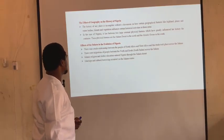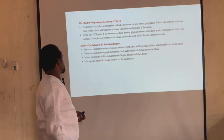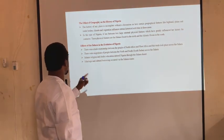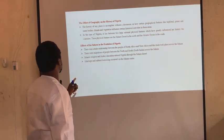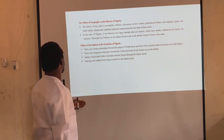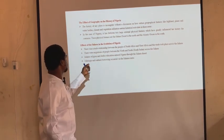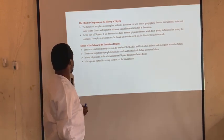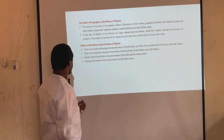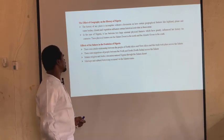The third effect is that Islamic religion and Arabic education entered the Nigerian area through the Sahara Desert. The fourth effect is that marriage and cultural borrowings occurred via the Sahara roads. To summarize the four effects of the Sahara: trade relationships, migration of people from north to south, the influence of Islamic religion and Arabic education, and marriage and cultural borrowing across the Sahara Desert.